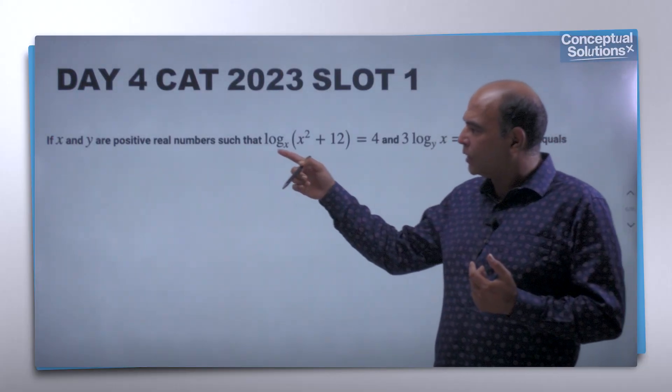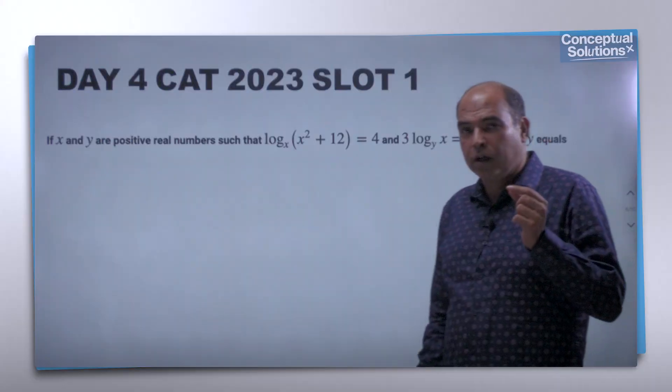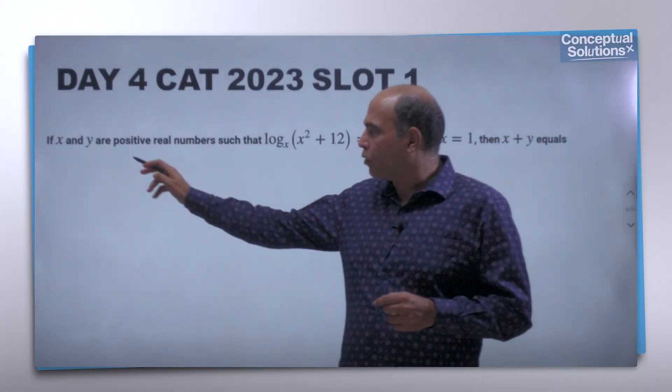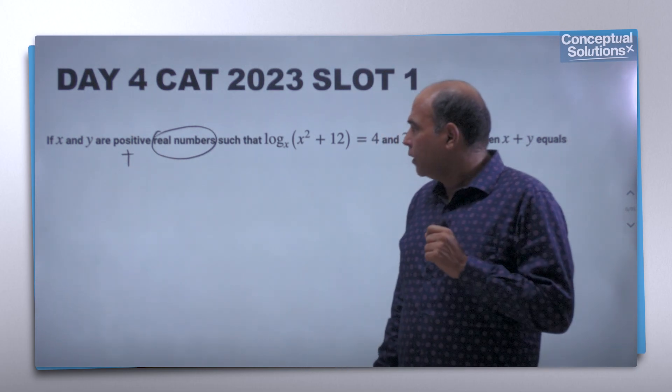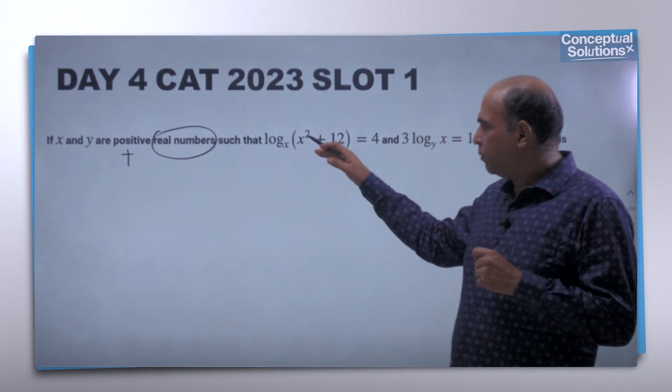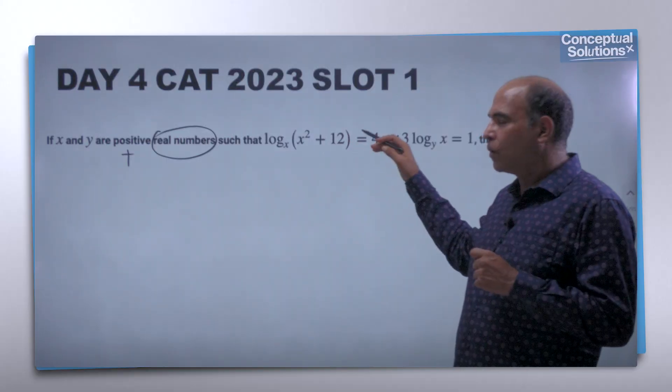In this question, x and y are positive real numbers. First thing you need to understand is they are positive and real—they need not be integers. The problem states log_x(x² + 12) = 4.